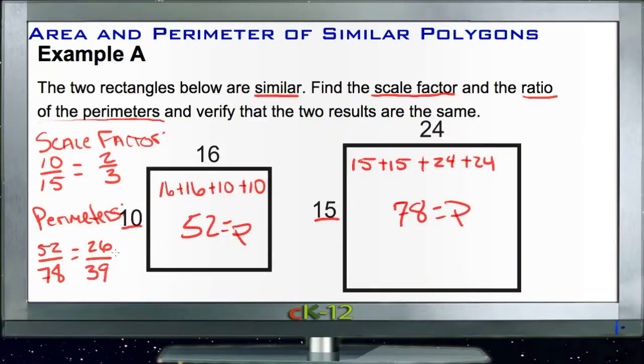That gives us 26 by taking half of that, and 39 by taking half of that. And then 26 and 39 both reduce by 13 to give us 2 out of 3, which is exactly what we hoped we'd see, showing that the scale factor and the ratio of the two perimeters are indeed the same.